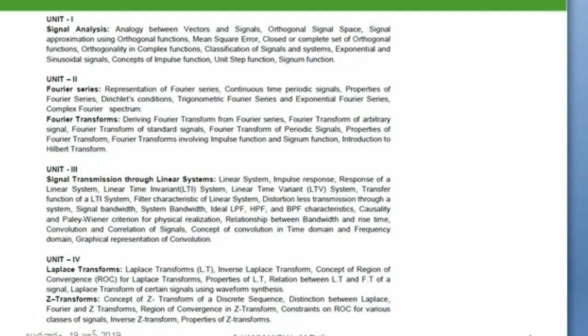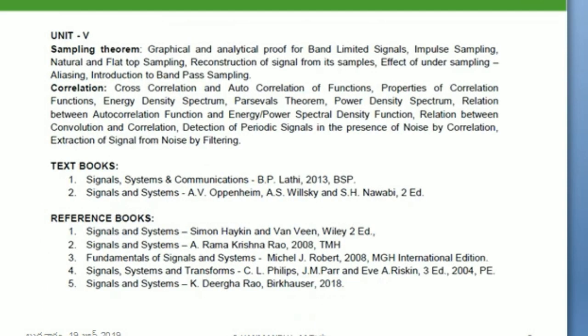In unit five, we will discuss the sampling theorem — how to obtain a sampled signal from a continuous-time signal and reconstruct it back under different conditions. We will also discuss correlation, cross-correlation, autocorrelation, their properties, power spectral density, and energy spectral density of a signal.